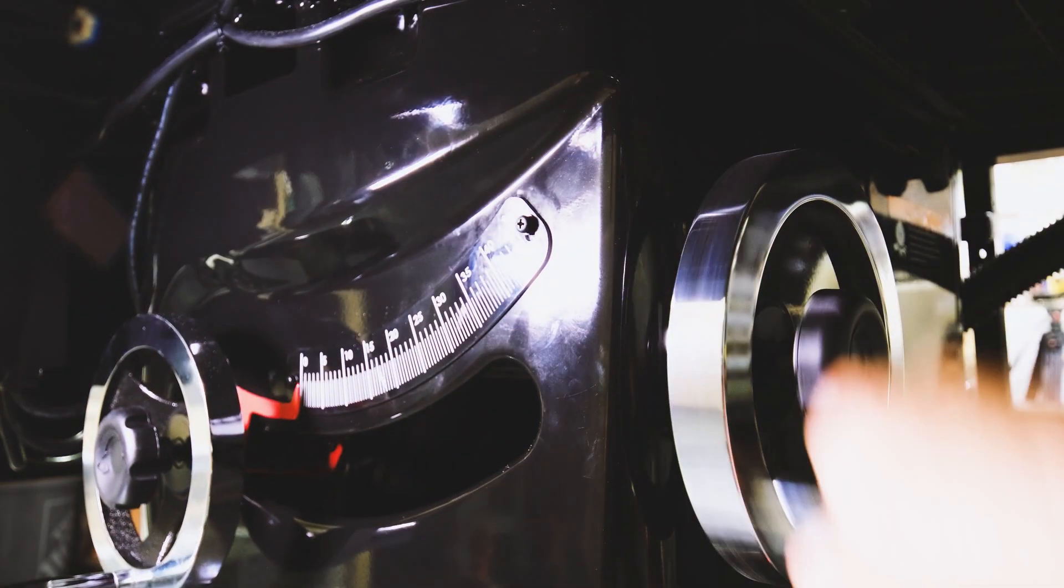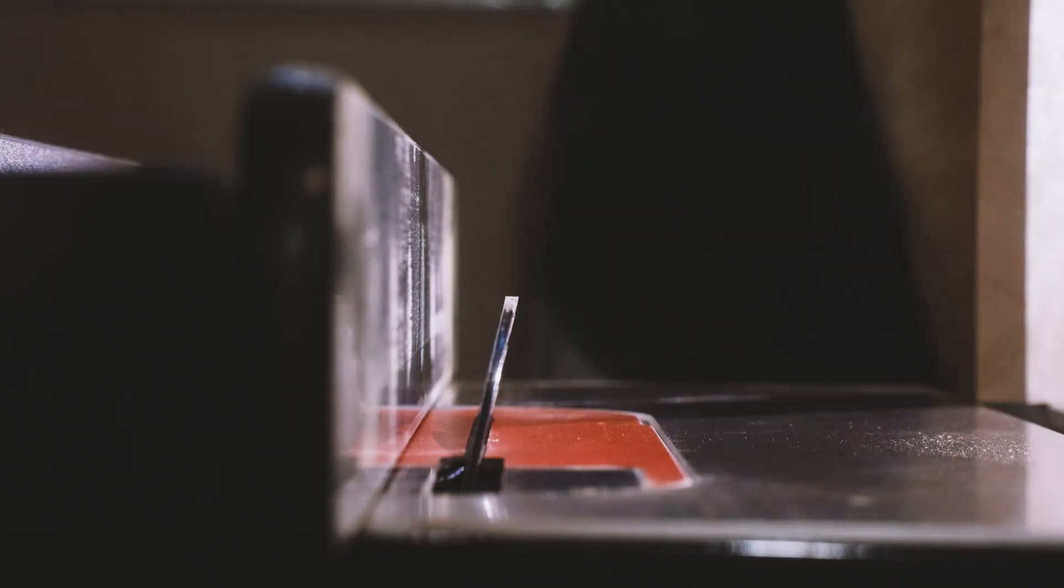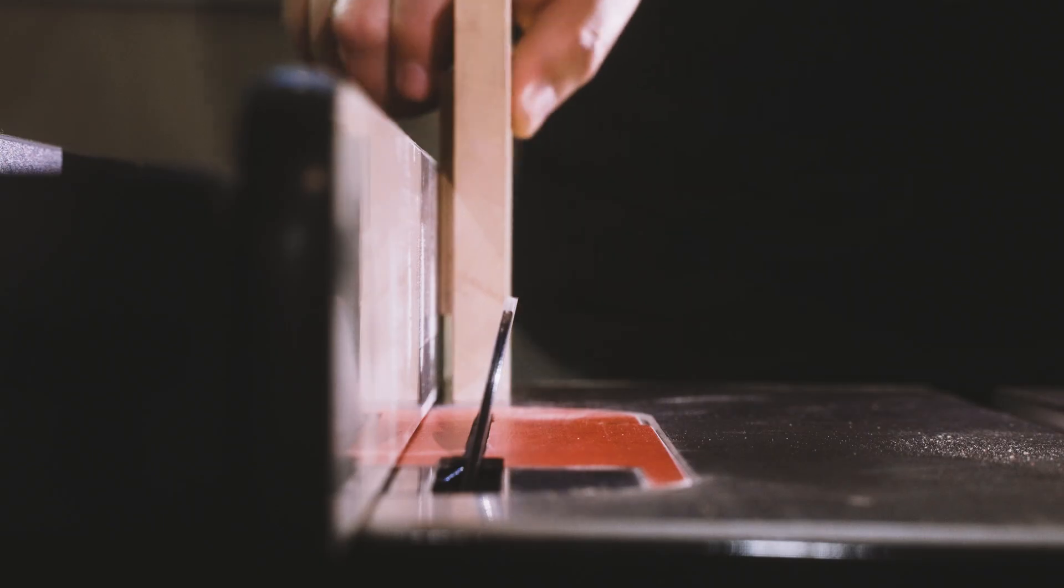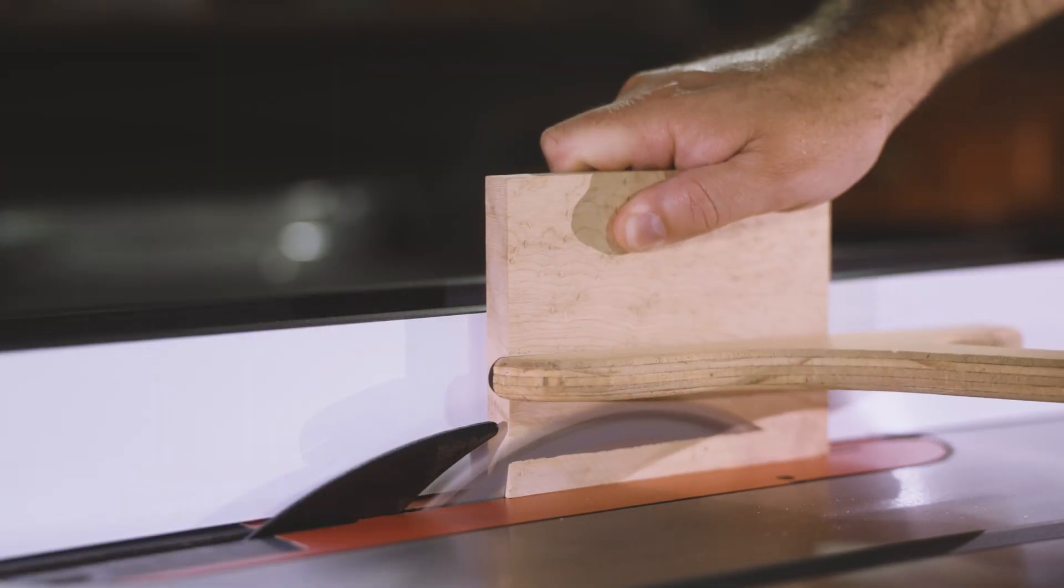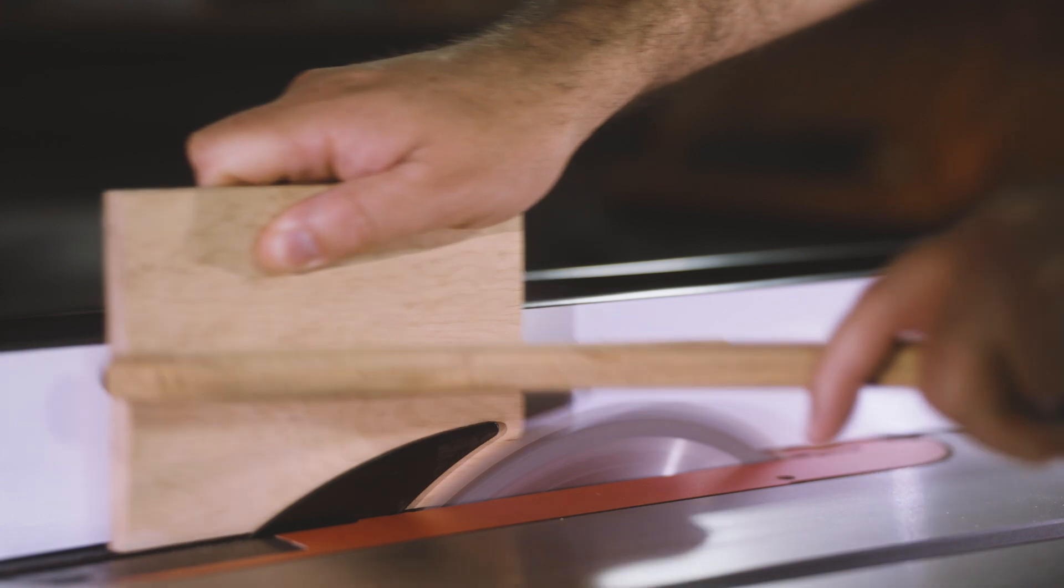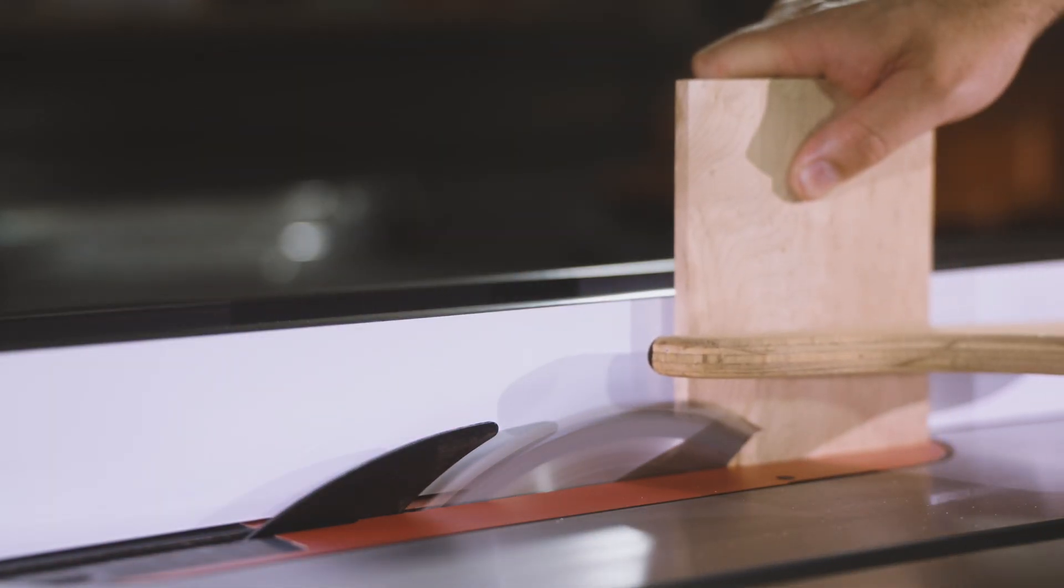I wanted to add an interesting shape to my box lid. So I set the table saw blade to about 12 degrees. Then using a push stick, I carefully cut along all four sides of the lid to add a slight taper.